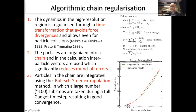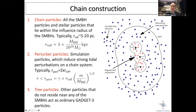Graphically: the black holes and all stellar particles within the chain region are included. The influence radius is a user-defined parameter — typically 5 to 20 parsecs for the simulations discussed today. Larger radii slow the simulation since more particles are included. Beyond that is a perturber region, typically twice the influence radius, for particles inducing strong tidal perturbations. Particles far away act as ordinary GADGET tree particles.